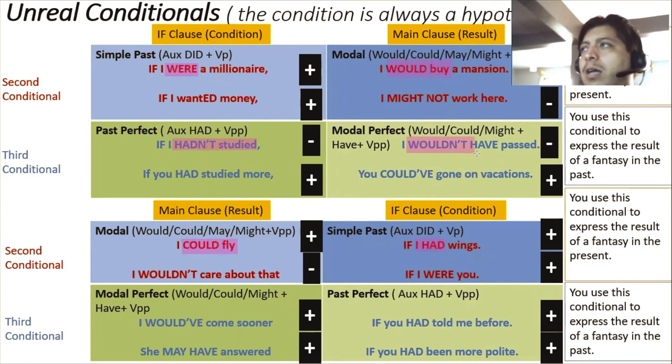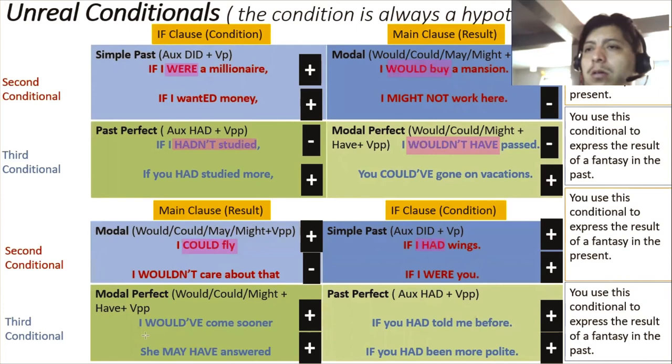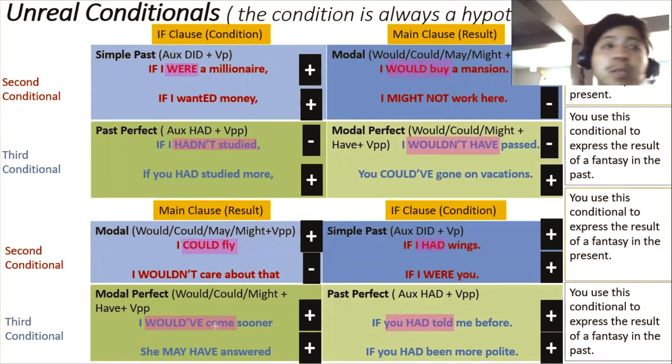For the third conditional: 'If I hadn't studied, I wouldn't have passed' — if clause in past perfect, main clause in modal perfect. Or starting with the result: 'I would have come sooner if you had told me' — the past perfect 'had told' marks the condition, and 'would have come' is the modal perfect result. These are the contractions: 'would have' becomes 'would've.'